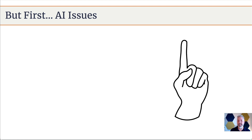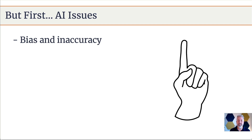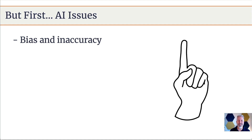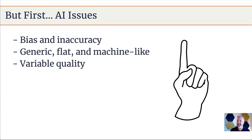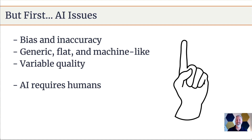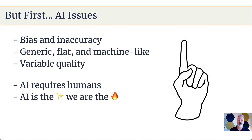Now that we're talking about AI, I think it's important to keep a few things in mind. AI and ChatGPT is not perfect. The information that comes out can be biased and inaccurate, so we've got to be aware of that. You as a human who does your job is the best source of understanding what is inaccurate or not. Sometimes the outputs can be kind of generic and flat and machine-like, and the quality is not always there. AI really requires the human touch — it's not human. It does not know what we know or feel what we feel. I like to say that AI is the spark, and we are the flame.